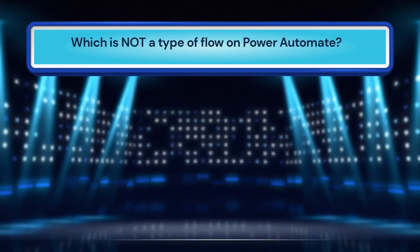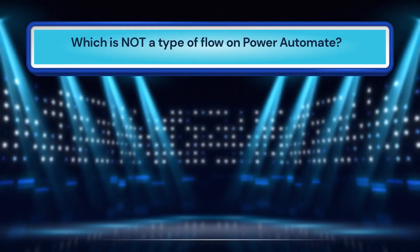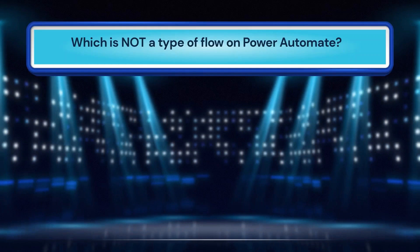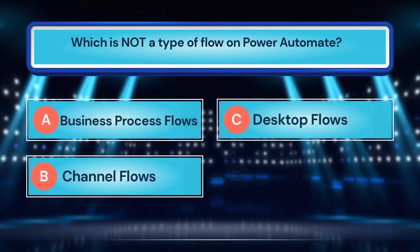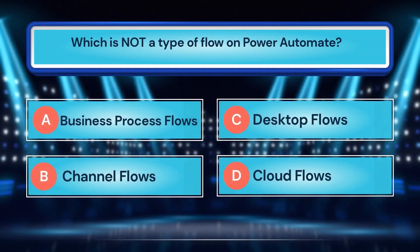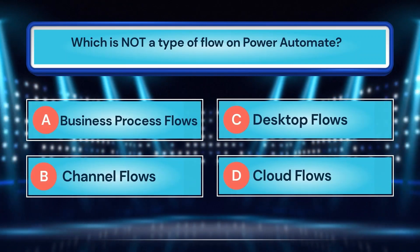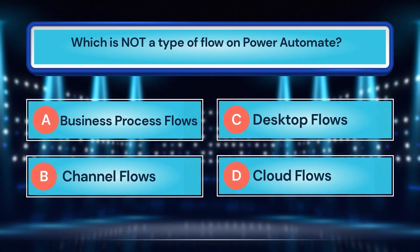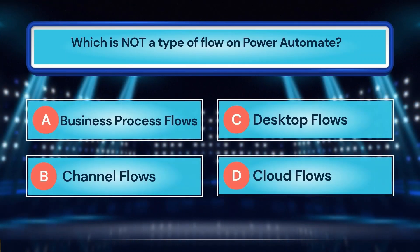Which is not a type of flow on Power Automate? A. Business process flows. B. Channel flows. C. Desktop flows. D. Cloud flows.